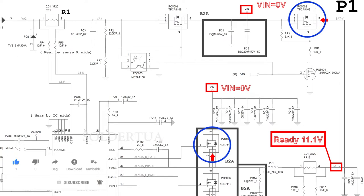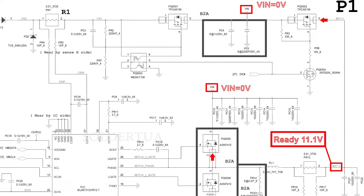Pay attention to MOSFET PQ5002 and PQ5005. In this condition, the P-channel MOSFET PQ5002 and N-channel MOSFET PQ5005 are still not active because there is no trigger on both gate pins. Even if MOSFET PQ5002 is briefly active because the gate pin is 0V, it returns to non-active in less than nanoseconds as current flows through PR3. If the gate voltage equals the source pin voltage on PQ5002, the MOSFET is in a non-active or closed position.